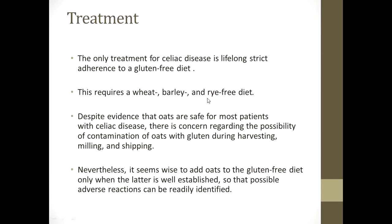The only treatment for celiac disease is lifelong strict adherence to a gluten-free diet, requiring a wheat, barley, and rye-free diet — no wheat or wheat products, no barley or barley products, no rye or rye products. Despite evidence that oats are safe for most patients, there is concern regarding possible contamination of oats with gluten during harvesting, milling, and shipping, as they are processed in the same mills. It seems wise to add oats to the gluten-free diet only once the diet is well established, so that any adverse reactions can be readily identified.